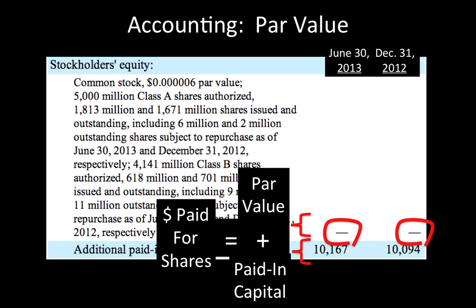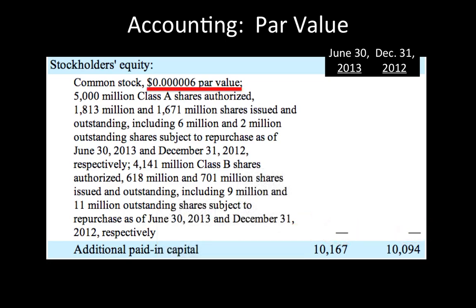As you can see, the total par value of Facebook's common stock is zero — it isn't actually zero, but rounds down to zero. The reason Facebook's stock has such a low par value is that the par value for each share is only six ten-thousandths of a cent. We can calculate the total par value by multiplying the number of outstanding shares by the par value per share.